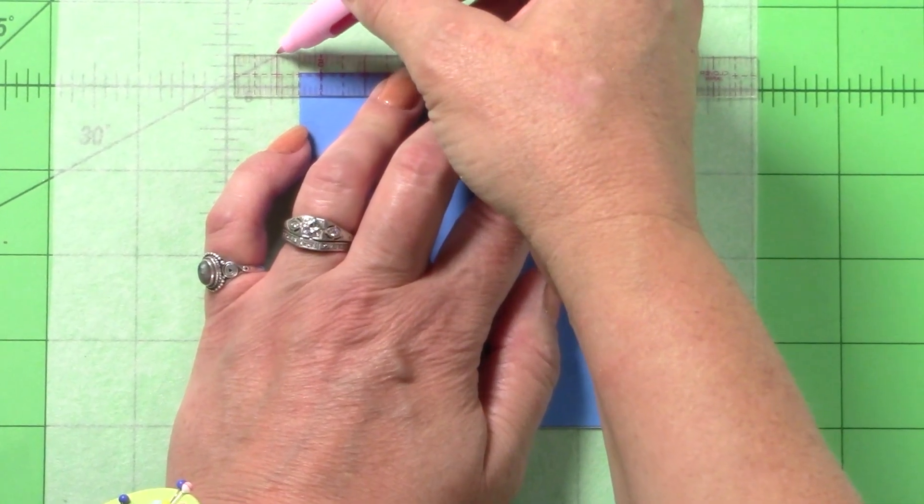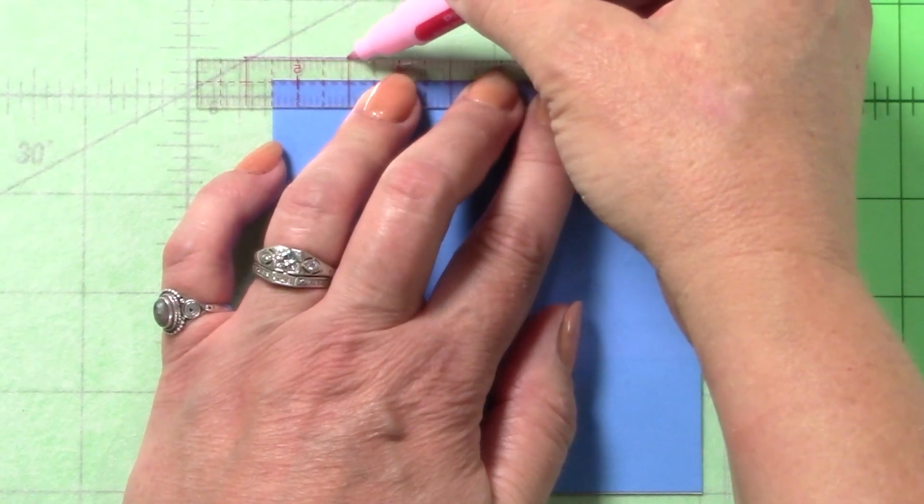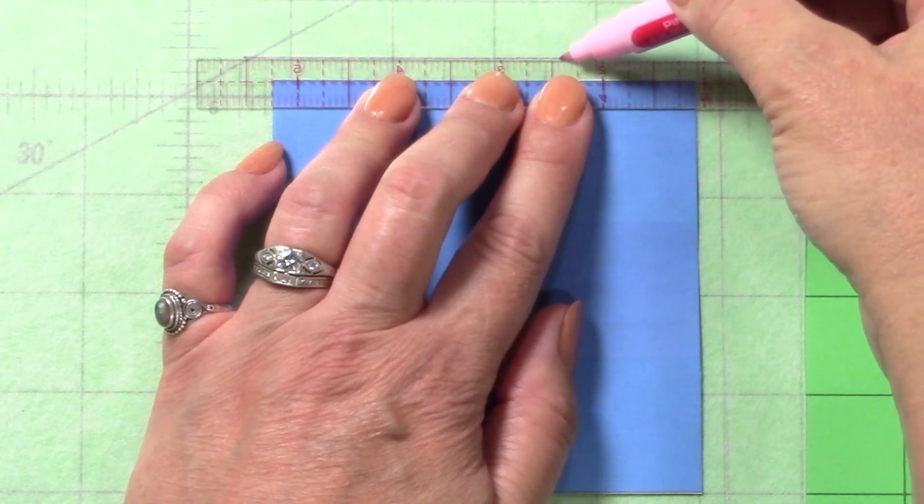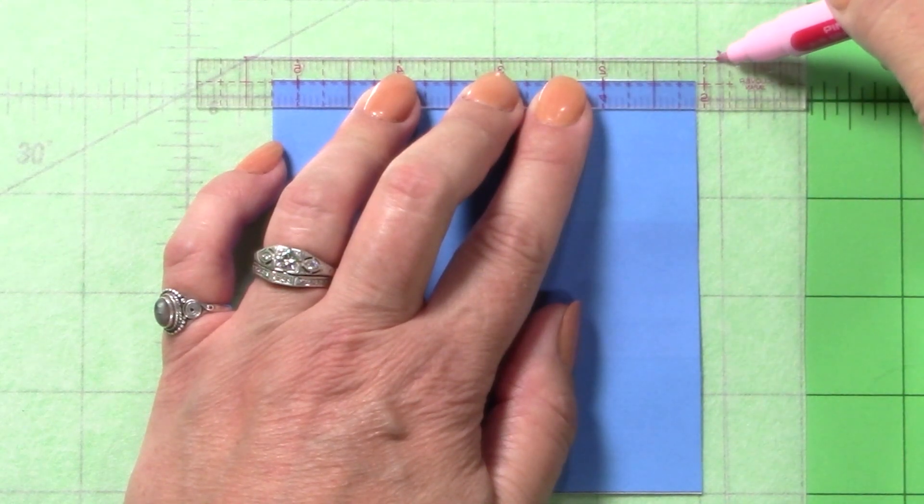The ½ inch Mini Ruler works well for marking narrower seam allowances, such as quilt designs and craft projects.